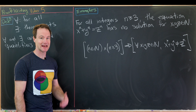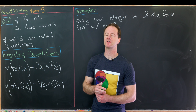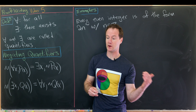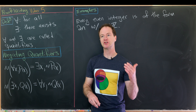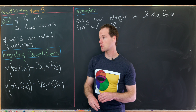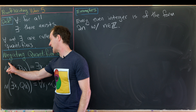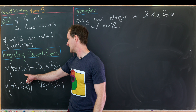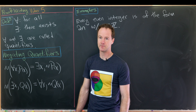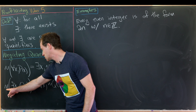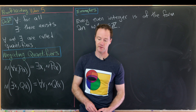Now let's look at negating statements with quantifiers. The rule is similar to negating ands and ors — an 'and' switches to an 'or' and vice versa under negation. Similarly, the universal quantifier 'for all' switches to the existential 'there exists,' and vice versa. Formally: ¬(∀x, P(x)) ≡ ∃x, ¬P(x), and ¬(∃x, Q(x)) ≡ ∀x, ¬Q(x).